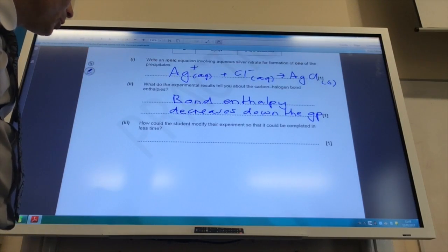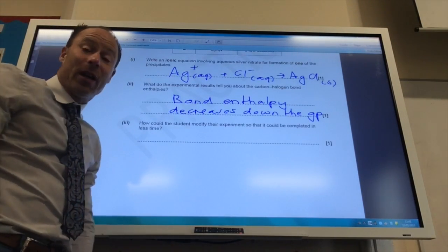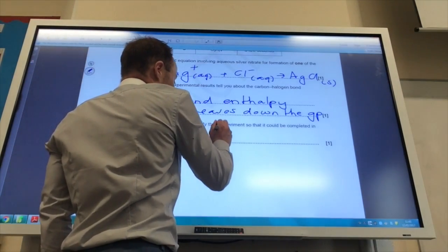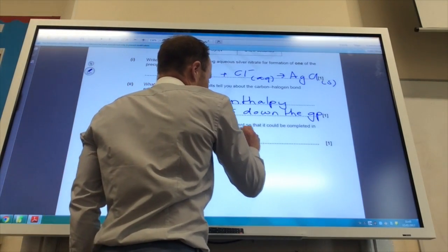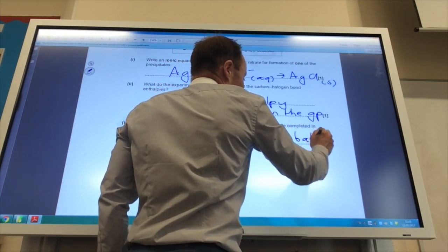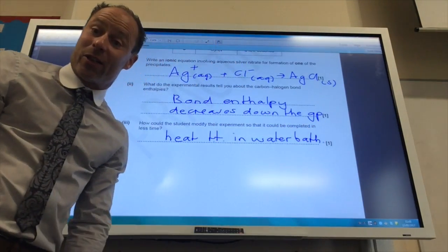How could the student modify the experiment so it could complete for less time? Well, you could warm it up. You could heat the test tubes in a water bath, which is how you probably did it when you did it as a practical.